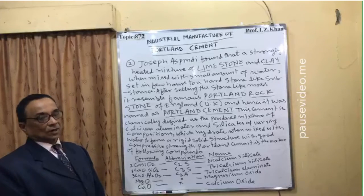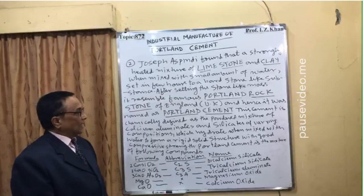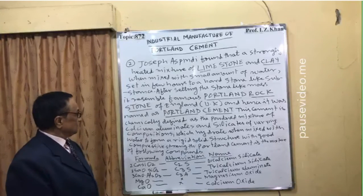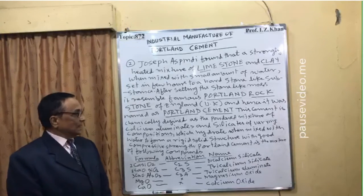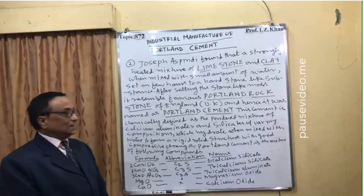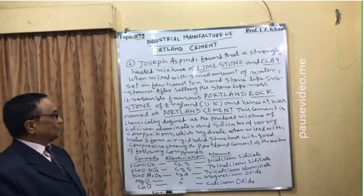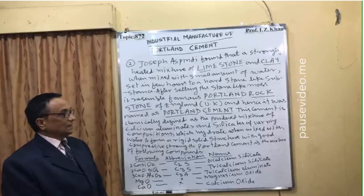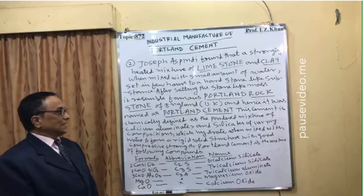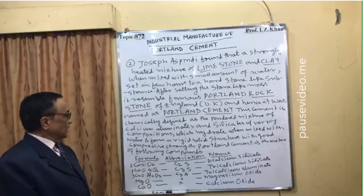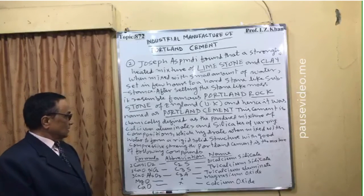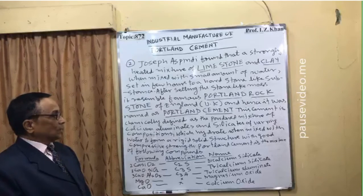Even today this name is widely used. This cement is chemically defined as the powder mixture of calcium, aluminate, and silica of various compositions. It is also described as a mixture of abrasive materials with different types of chemicals.